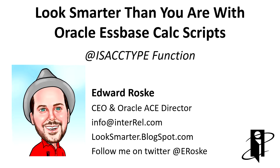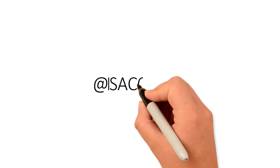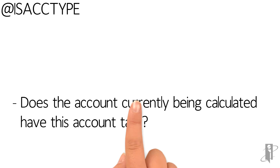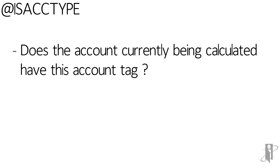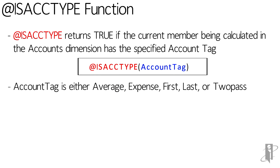Welcome to the rarely used isAccountType function. isAccountType tells you if the account currently being calculated has some specific account tag that you're asking about. You'll say isAccountType and then some account tag like expense, average, first, last, or topass.